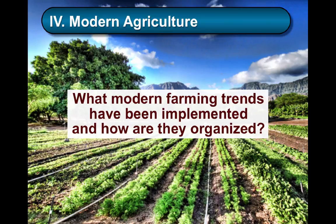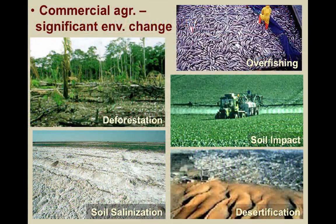At multiple scales, commercial agriculture creates a significant environmental impact. Overfishing has caused many of the world's fish stocks to dwindle toward endangered levels, necessitating quotas and policing of international waters. Around 70% of the world's plants and land animals live in the forests, and with deforestation at over 28,000 square miles a year, more species are at risk now than ever before.